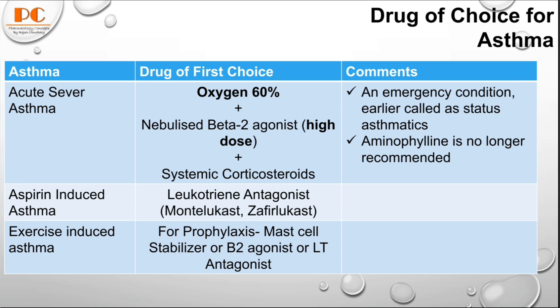For aspirin-induced asthma, we preferably use leukotriene antagonists like montelukast and zafirlukast, since aspirin is a COX inhibitor. For exercise-induced asthma, we can use a mast cell stabilizer, beta-2 agonist, or leukotriene antagonist. These are the basic drugs of choice for asthma.